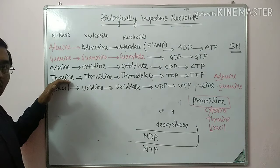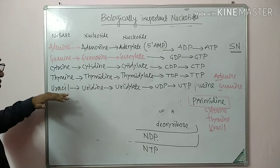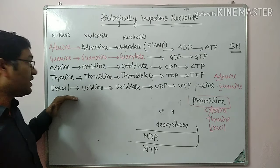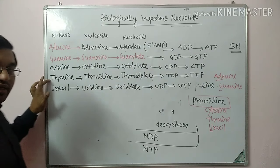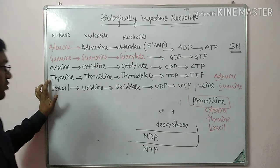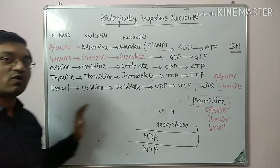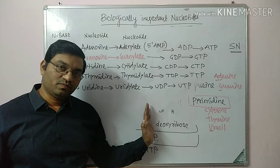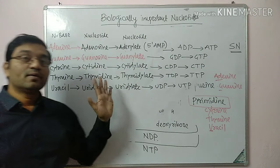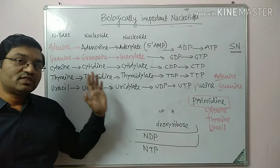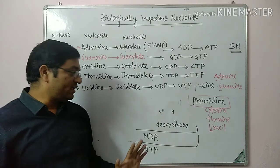Thymine is found in DNA — it is a methylated pyrimidine — while uracil is found in RNA. Adenine, guanine, cytosine and thymine are found in the DNA molecule. Adenine, guanine, cytosine and uracil are found in the RNA molecule. So these are the important bases which are components of DNA and RNA.